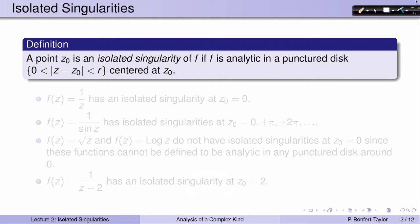Let's start with a definition. A point c0 is called an isolated singularity of a function f if f is analytic in a punctured disk centered at c0. So here's this point c0, and if you can find a disk centered at c0 such that f is analytic in the whole disk with the exception of c0, then c0 is called an isolated singularity of f.